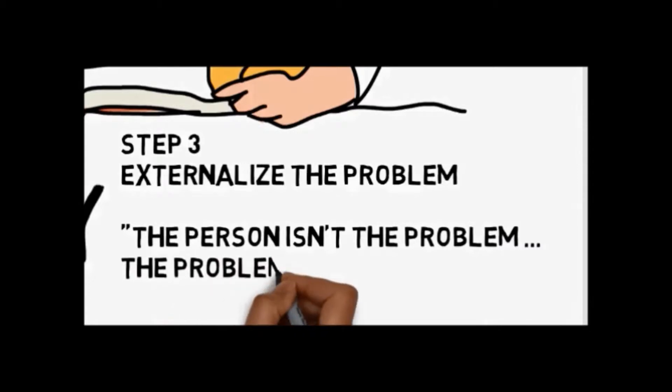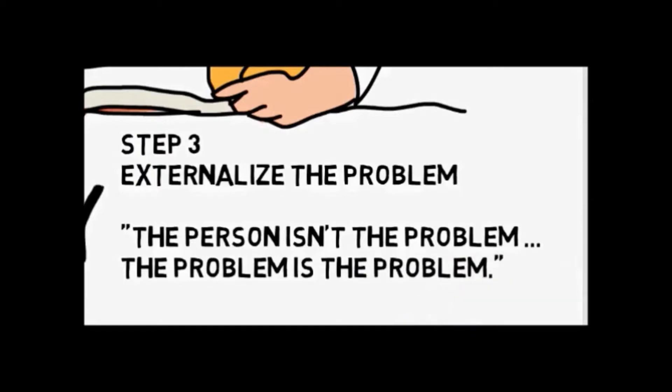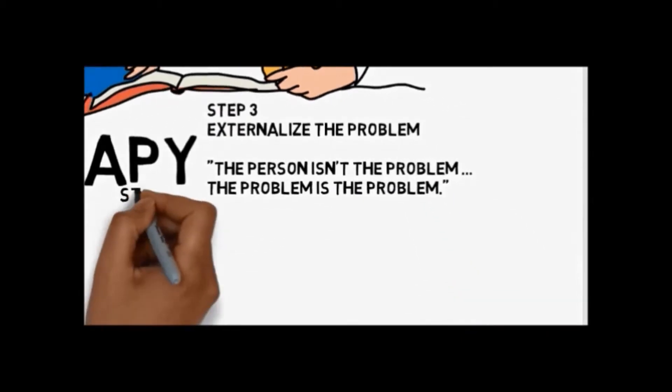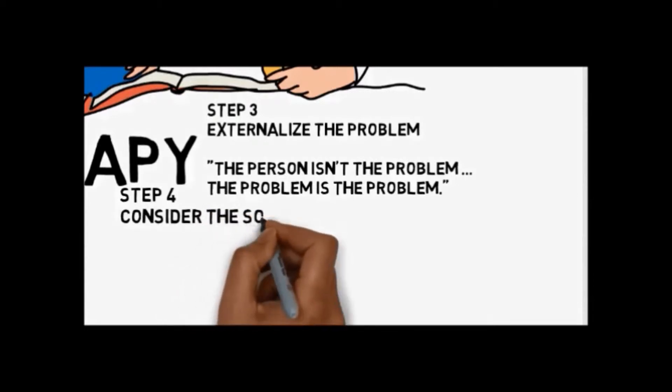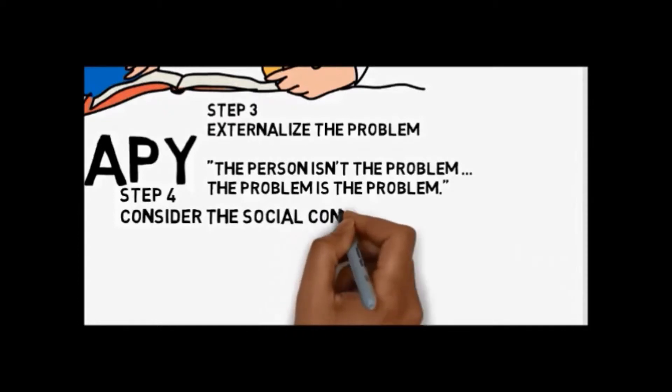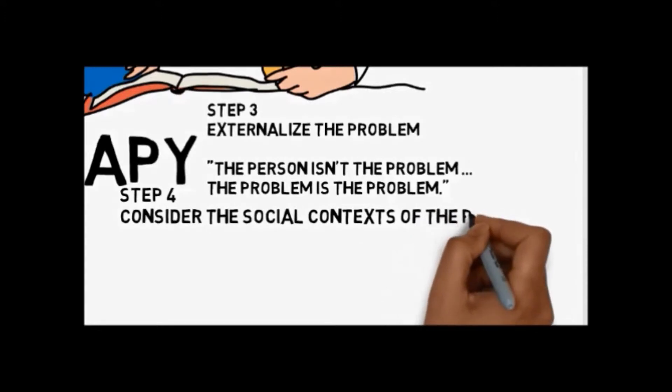The fourth step then is to consider the social context of the problem. What are the social and political contexts of the problem? What are the beliefs that are part of this problem? What feeds the problem? What starves the problem? Who benefits from the problem? In what settings might the problematic behavior or attitude be useful? What sorts of people would definitely be opposed to the problem?